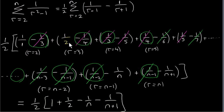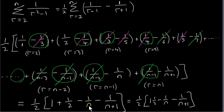The whole series collapses to the expression: 1 plus a half minus 1 over n minus 1 over (n plus 1). Of course, we also have to multiply by the factor of a half that's in front. I'll only simplify by adding 1 and a half together and leave it in that form.